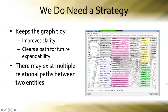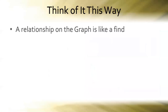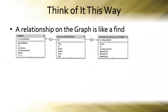The other reason why we need a graph management strategy is that there may exist multiple relational paths between any two entities in a database system. Entities are the things or ideas about which you want to store data. From entity A to entity B, relationally speaking, there may be more than one way to get there. A relationship on the relationship graph is like a find — it's like a find that persists, baked into the schema or DNA of the database.